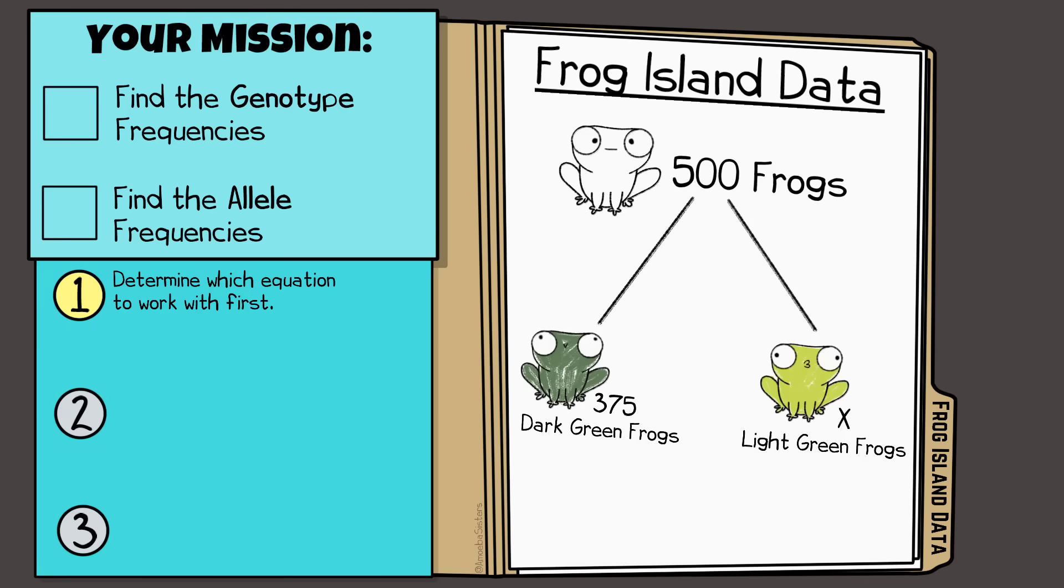Step 1. Determine first whether you're going to work with the first equation or the second equation. Since I'm working with individuals here that have genotypes, I'm going to work with the second equation first. Step 2. Figure out what value you can determine.